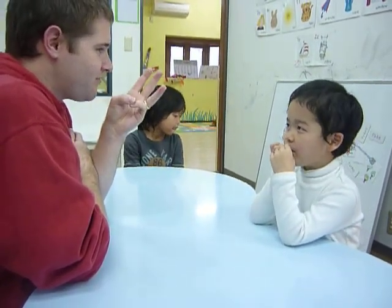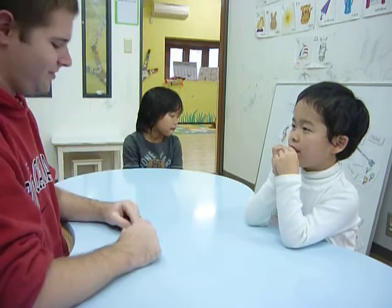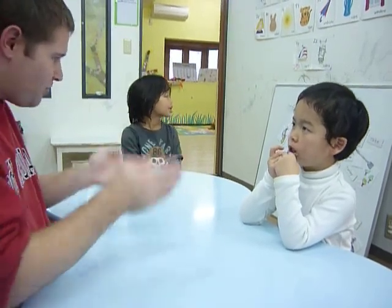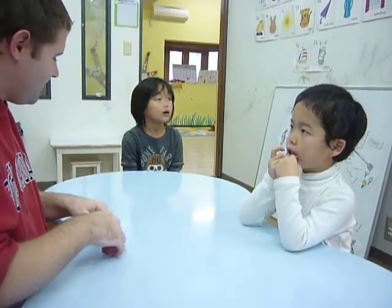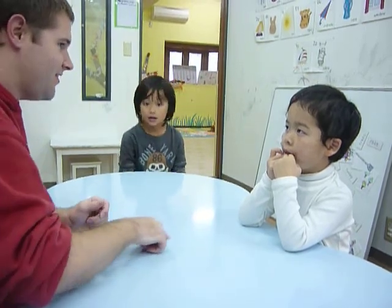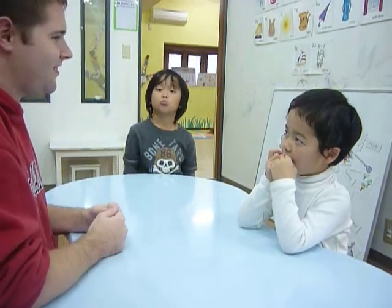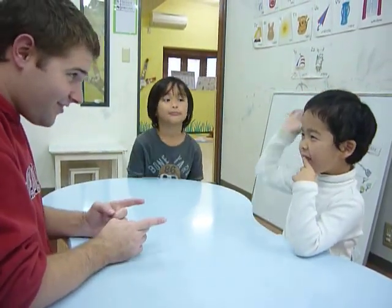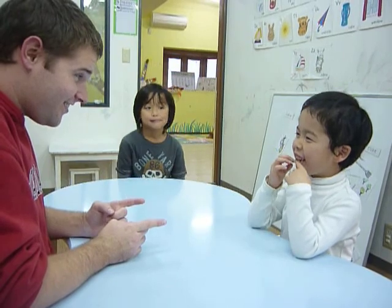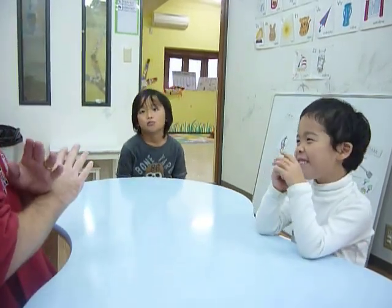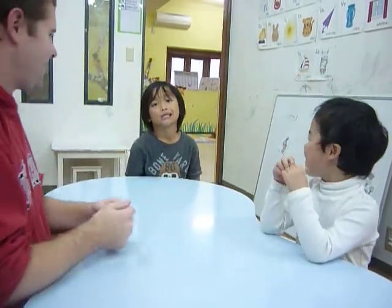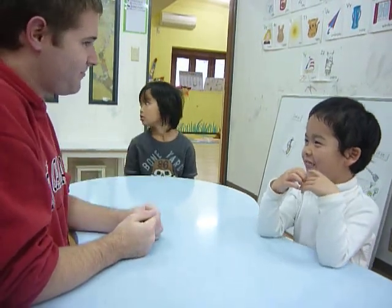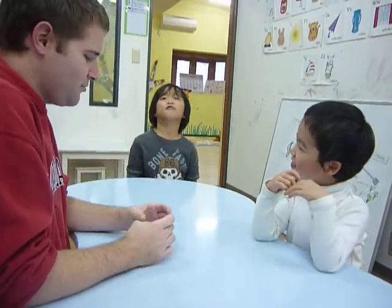Hint number three — its shape. It looks like an egg. Cherry? No, it's not a cherry. But it is small. It's red.